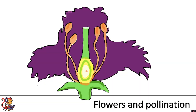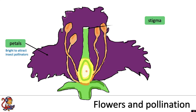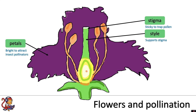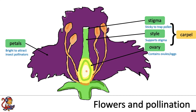Let's first look at the different parts of the flower. Flowers have petals that are brightly coloured to attract insect pollinators. They have a stigma that is sticky to trap the pollen, a style to support the stigma, and an ovary that contains ovules, otherwise known as eggs. The stigma, style and ovary together make up the carpel, which is the female reproductive system.